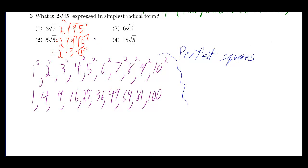You want to find the biggest perfect square that's a factor of 45 here. And the biggest one is actually 9, because you can write 45 as 9 times 5.